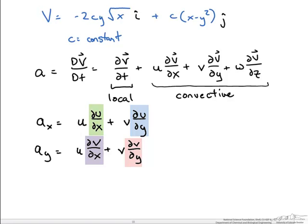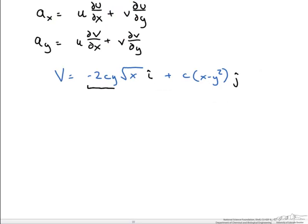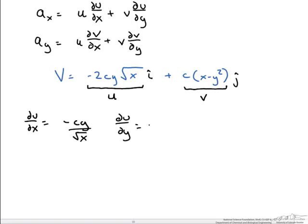From this we need four different partial derivatives of our velocity field. A good place to start is by taking those derivatives and then plugging them in with the respective velocity terms to get our accelerations. We know u is negative 2cy times the square root of x, and v is c times the quantity x minus y squared. So du/dx equals negative cy over the square root of x, and du/dy equals negative 2c times the square root of x.